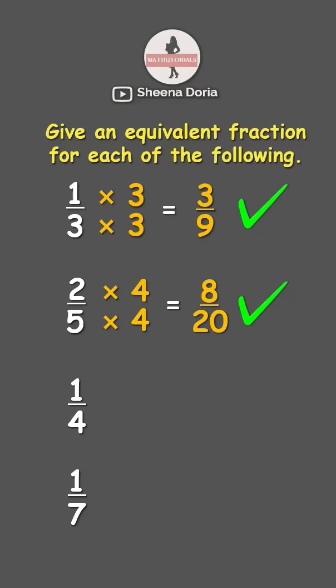And the next one, we have one-fourth. Let's say I will multiply this by two. So, one times two is two, while four times two is eight. Therefore, one-fourth and two-eighths are equivalent fractions.